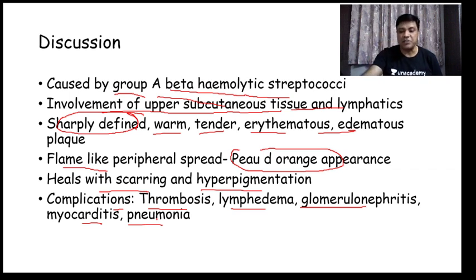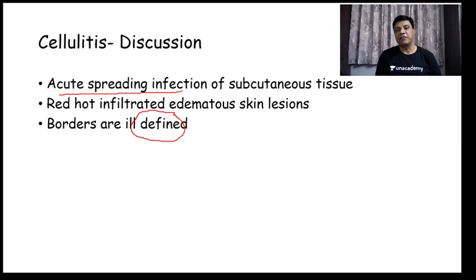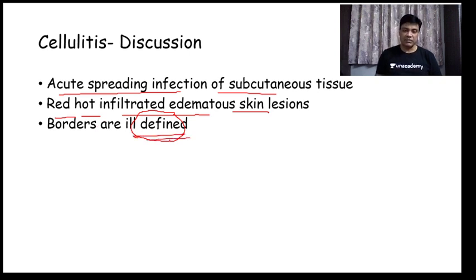Erysipelas is sharply defined — in comparison to cellulitis, which is a staphylococcal infection with ill-defined lesions. Cellulitis is an acute spreading infection of subcutaneous tissue with red, hot, infiltrated, edematous skin lesions but with ill-defined borders. Erysipelas is well-defined and caused by Streptococci; cellulitis is ill-defined and caused by Staphylococcus.